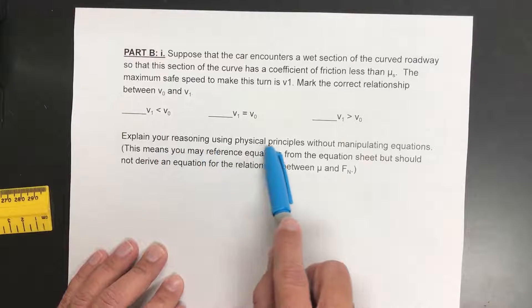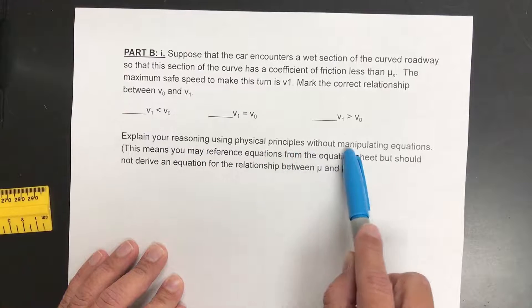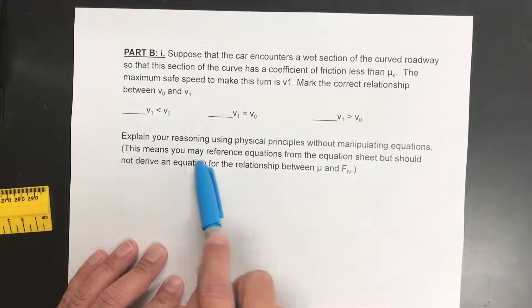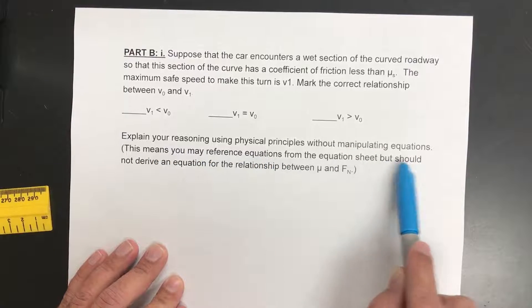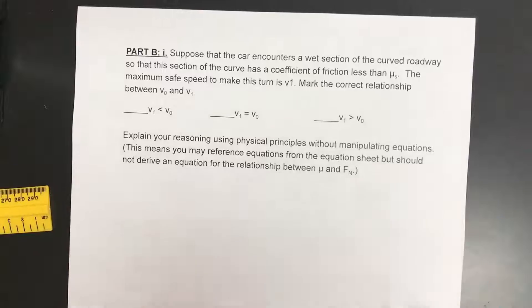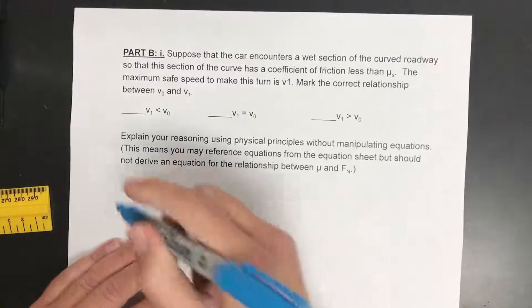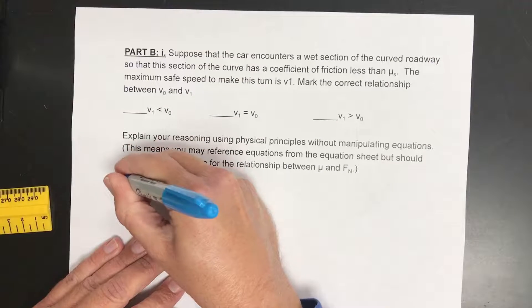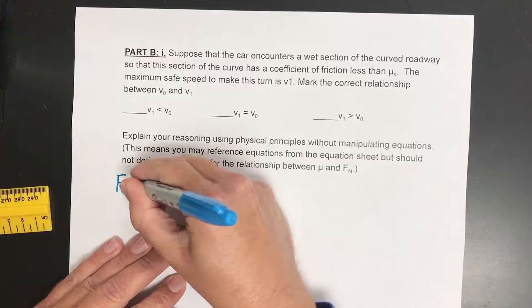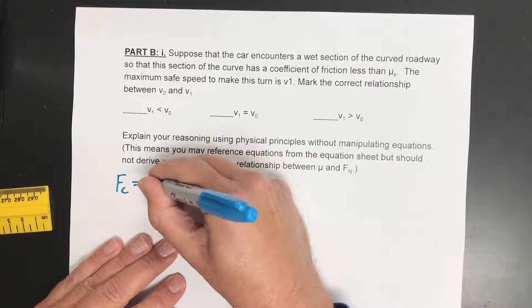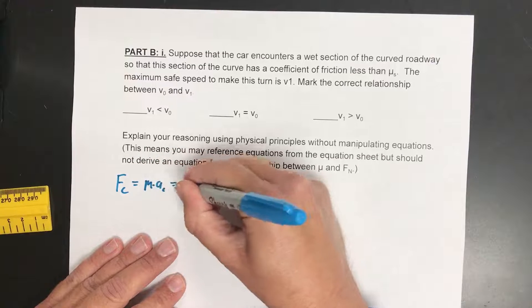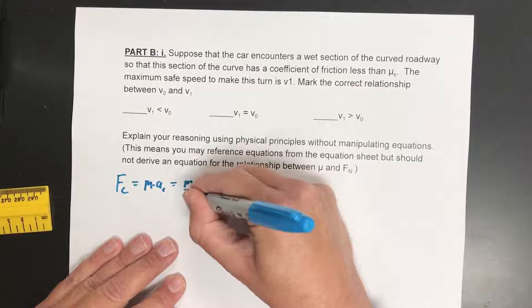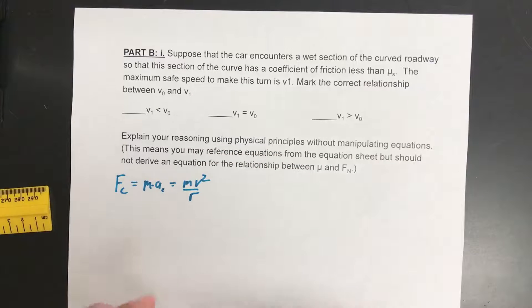And then explain your reasoning using physical principles without manipulating equations. This means you may reference equations from the equation sheet but should not derive an equation. Come on guys. Okay fine. So the one equation that you should probably mention is that the centripetal force is equal to mass times centripetal acceleration which is mass times velocity squared over r. So you will want to reference that one.